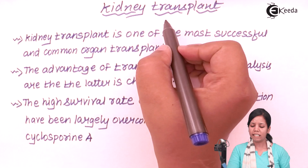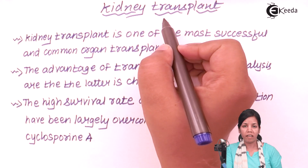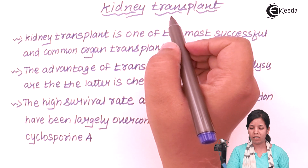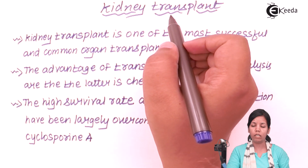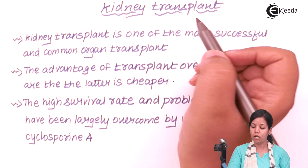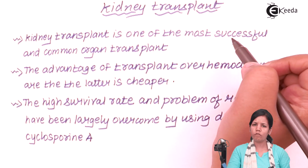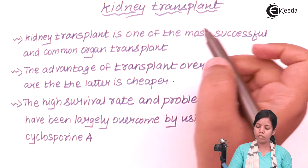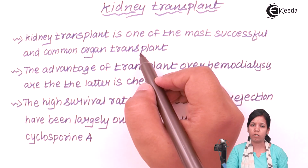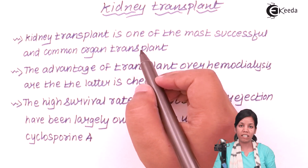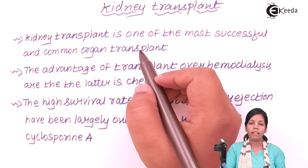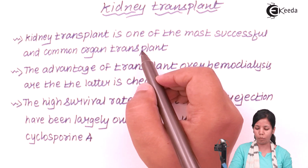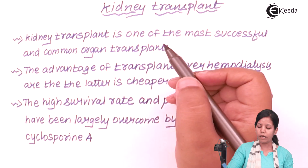Kidney transplant, whenever done in a patient whose kidneys have been severely damaged — both kidneys especially — is one of the most successful and common types of organ transplant. After skin transplant, kidney transplants are not as severe as other transplants that happen in the body.